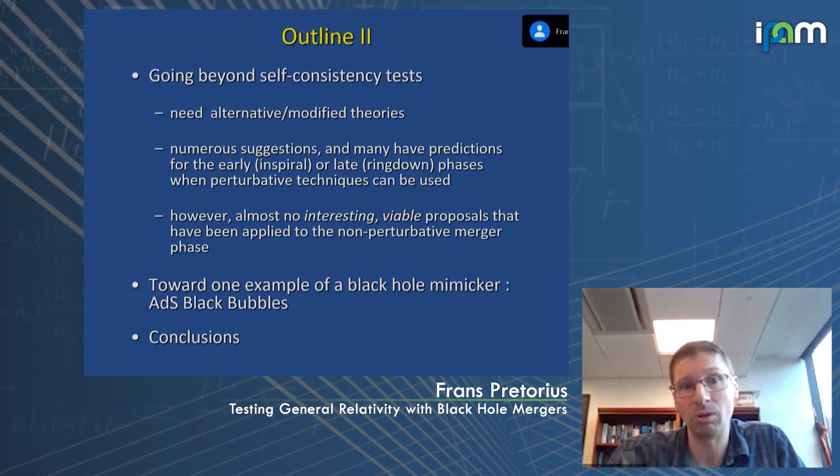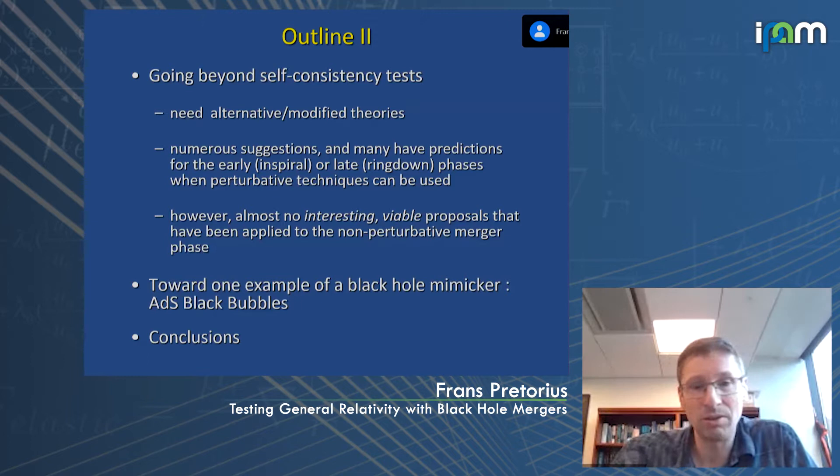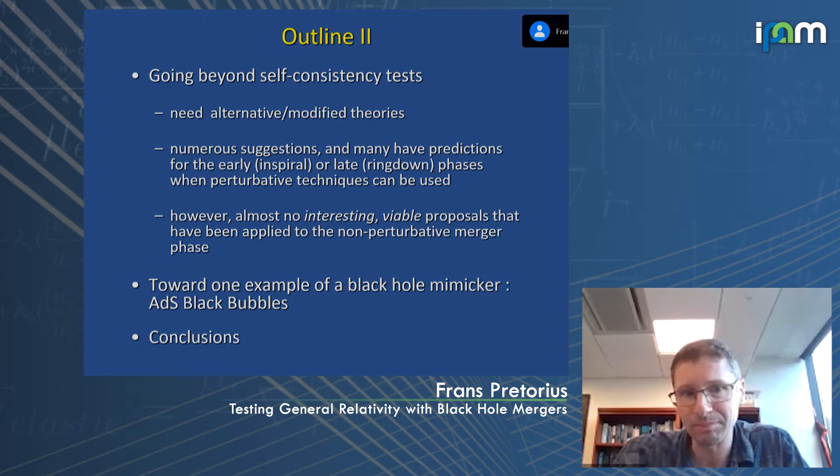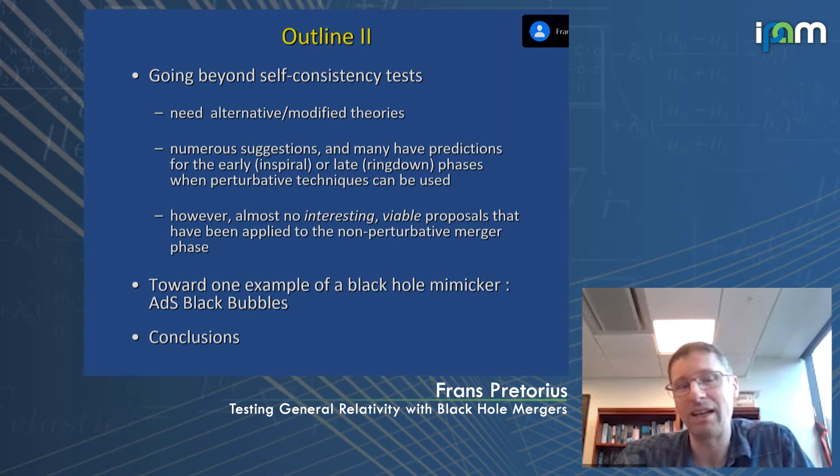That's either in the early inspiral, where various modifications to the post-Newtonian expansion have been developed, or in the ring-down regime if black hole solutions are known in these modified theories, where perturbative techniques can be applied. I'll argue, somewhat provocatively, that there are almost no interesting viable proposals to date that have been applied to the non-perturbative phase of merger.